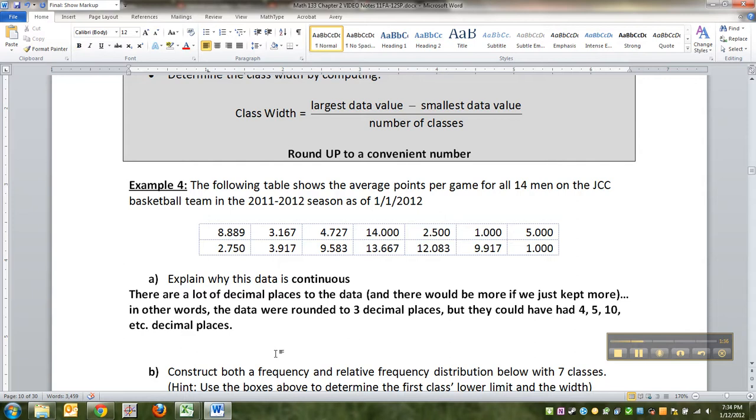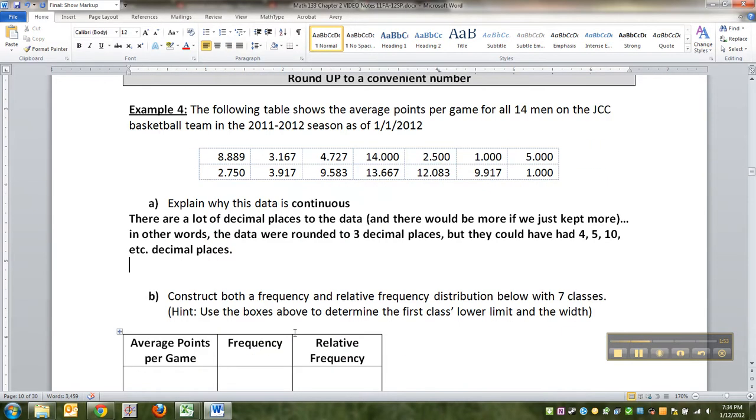The number of points they have in any one game is discrete. So in game one, it's ten points. Game two, it's eight points. Game three, it's nine points, and so on. What we're talking about is the average. The average for the player over the season is going to be a continuous variable. It's got lots and lots of decimal places.